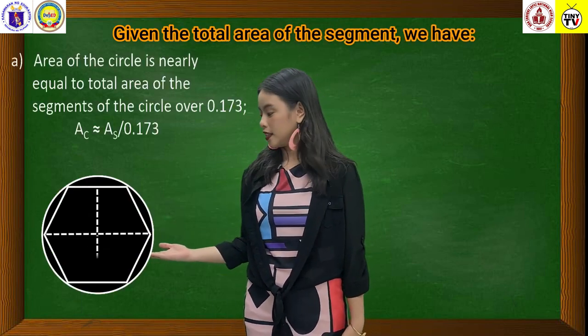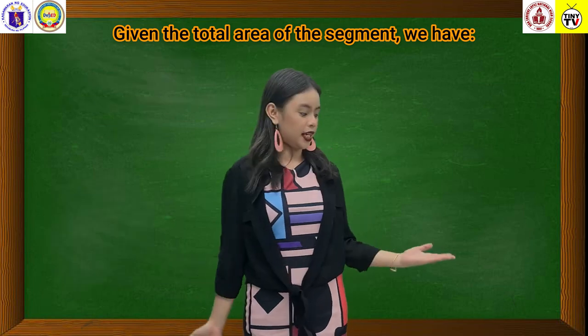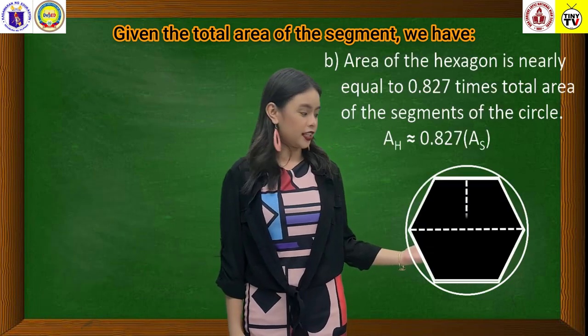Given the area of the segment, we have A, area of the circle is nearly equal to, and B, area of the hexagon is nearly equal to.